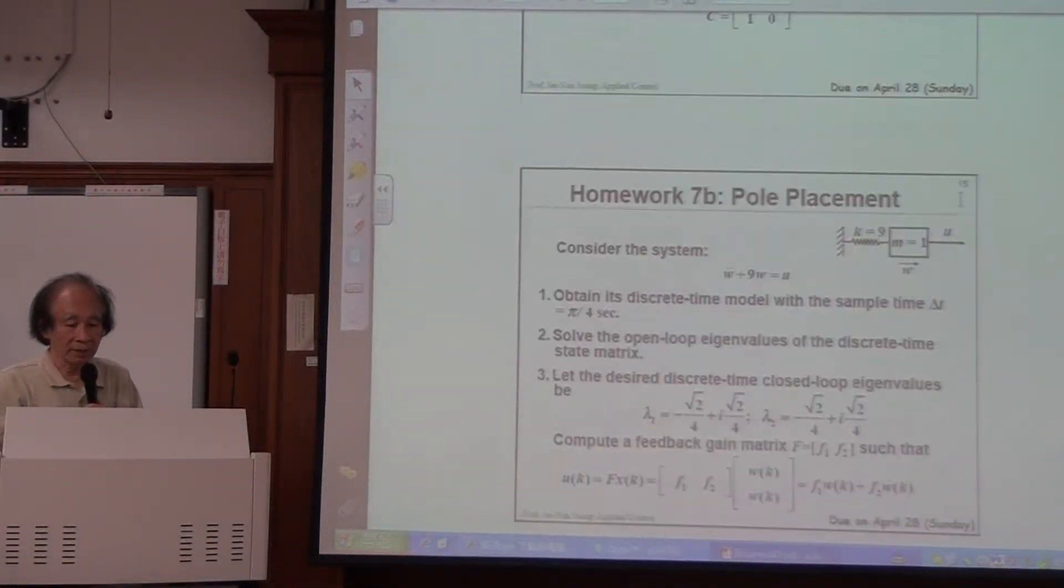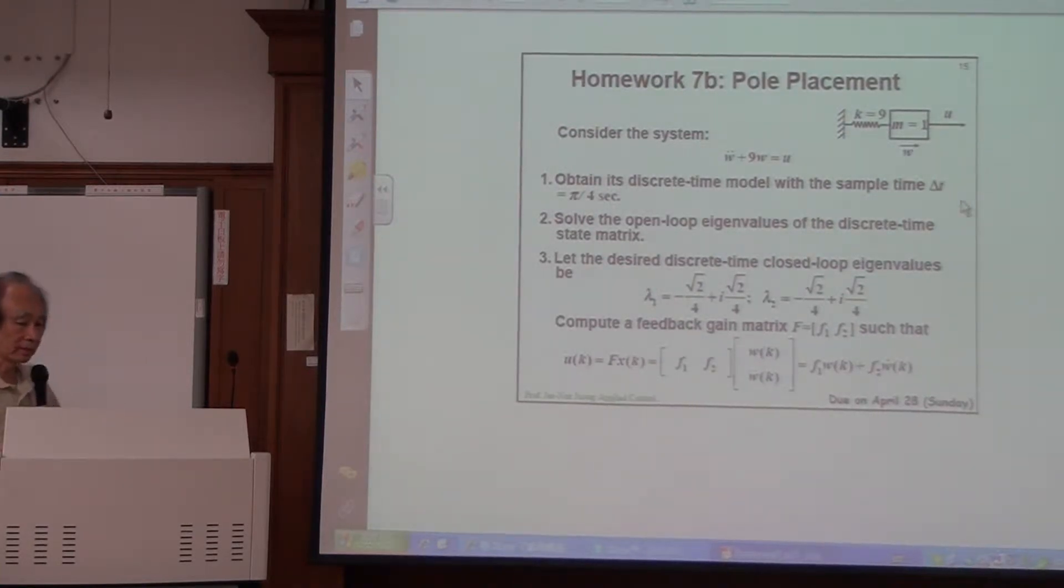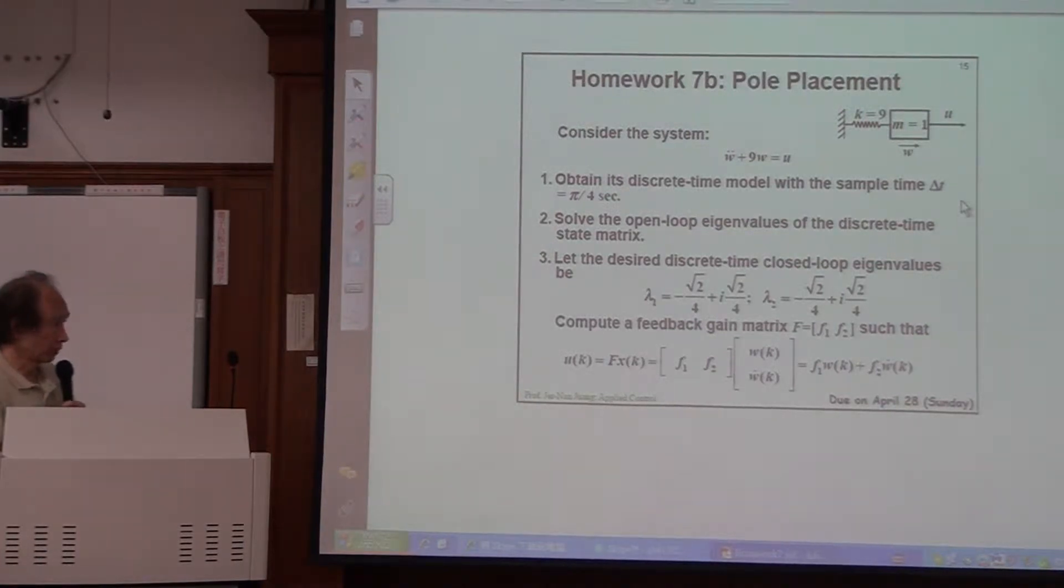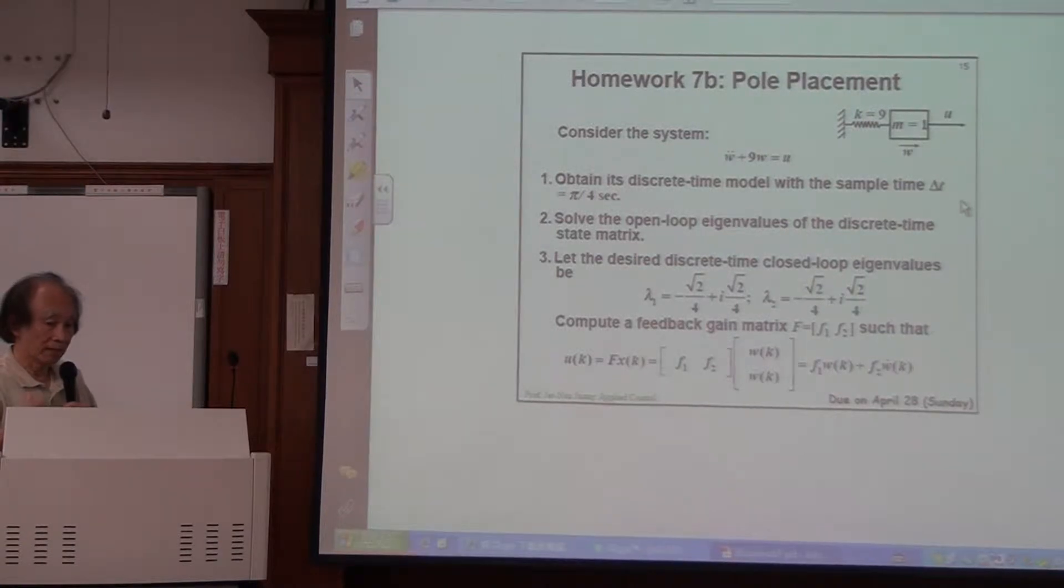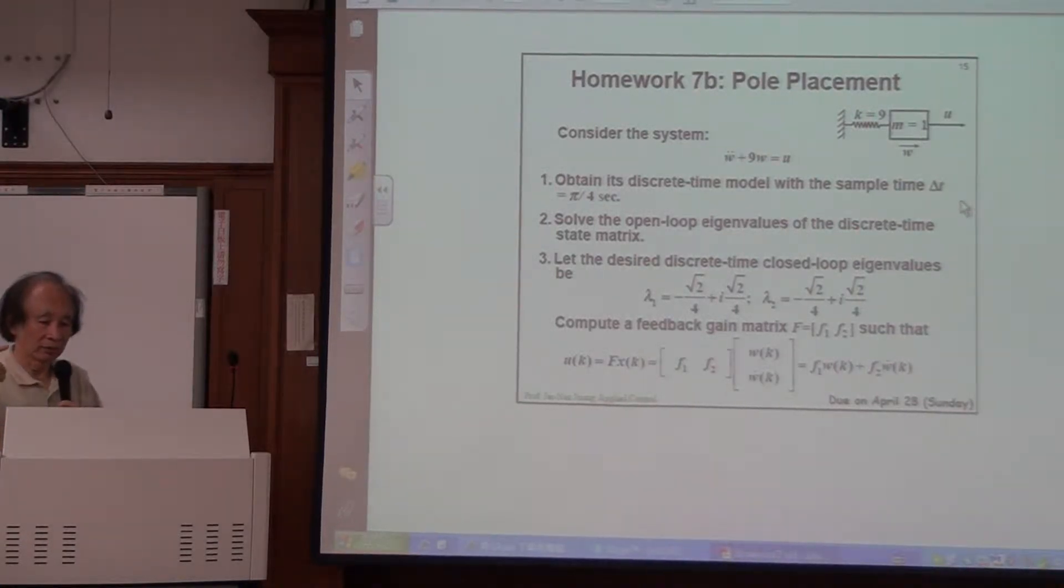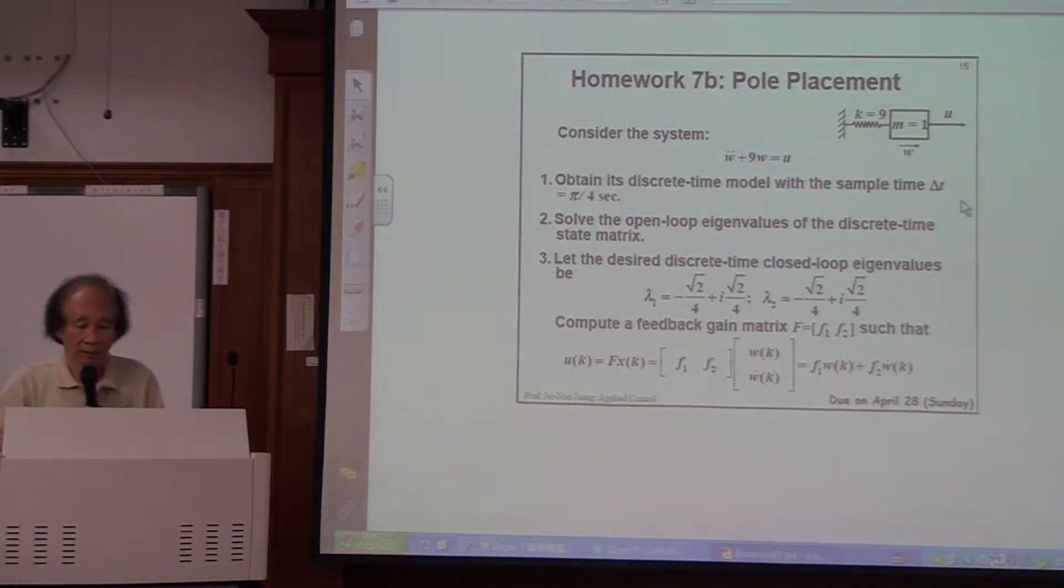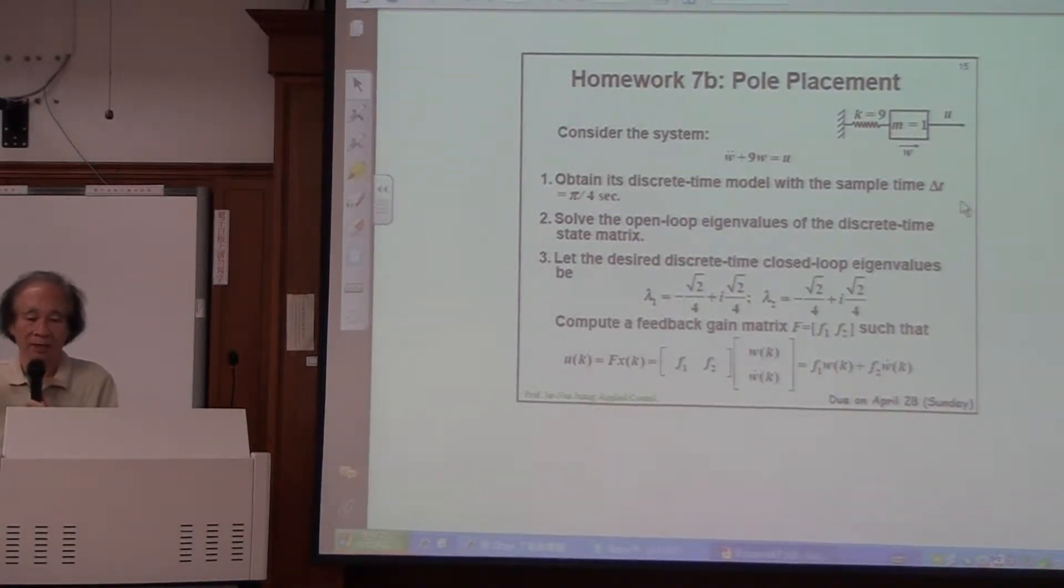Then the 7B, this is kind of pole placement technique. This is also very straightforward to do if you listen carefully about my lecture and also follow the note, my lecture note. Then you know how to do this very easy. So this is two exercises. One is observer model and one is pole placement. And we will continue to talk about pole placement today.